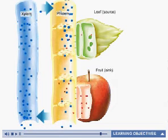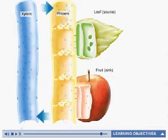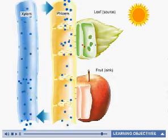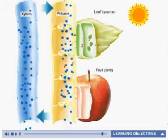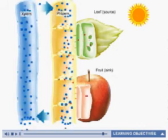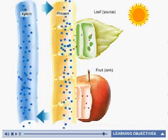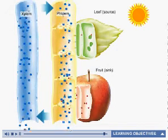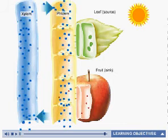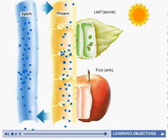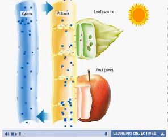Many factors influence the rate of sugar transport. Most important among these is the rate of photosynthesis. On sunny days, when the photosynthetic rate is high, phloem transport rates are also high. On cloudy days, when the photosynthetic rate is low, phloem transport rates are also low.